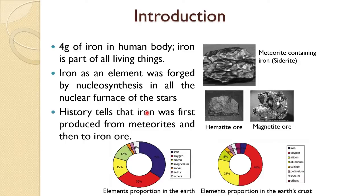Whatever is available belongs to the earth's crust, and that is the iron which we are using at present. This is about 5 percent of the earth's crust. Some of the iron ores are hematite and magnetite, which are shown here.